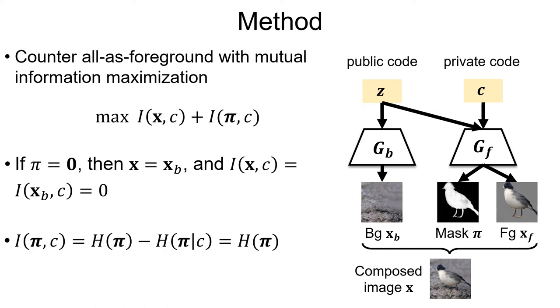Second, we maximize the mutual information between the generated mask and the private code C. This term relates to the entropy of the generated mask. Maximizing this term requires a high-entropy mask. To this end, non-zero and highly diverse masks are encouraged, therefore countering the all-as-foreground trivial solution.